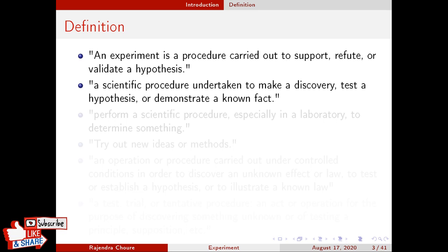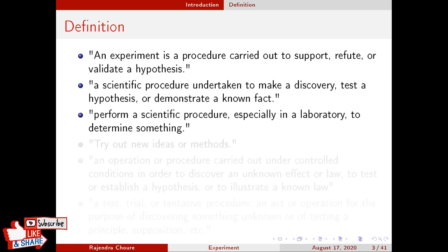Demonstration of a known fact is also included, like Michael Faraday's experiment, where he knew that lightning is there. He performed the kite experiment, to which he attached a conductive string, and proved that electricity is there in the sky, in the thunderbolts. The next definition is: perform a scientific procedure, especially in a laboratory, to determine something.